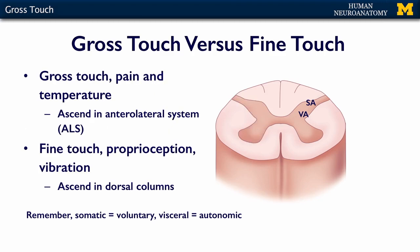Gross touch and fine touch travel through different areas of the spinal cord white matter. Gross touch, pain, and temperature, once they make their synapses, ascend in the anterolateral system. These tracts were formerly called the ventral and lateral spinal thalamic tracts, because they start in the spine and go to the thalamus, but now we group them together as the anterolateral system.